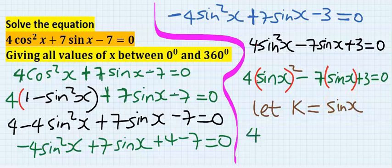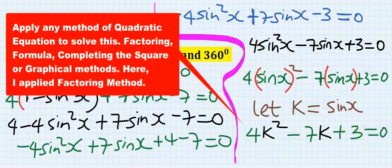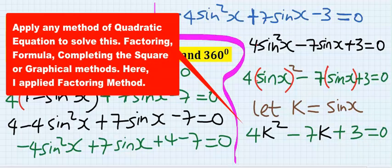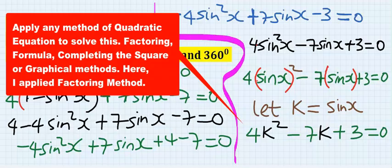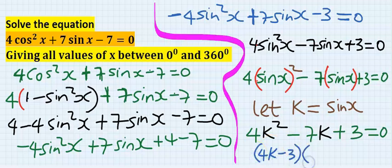I'm now going to have four, and any place I see sine x I will now have k. So it's going to be k squared minus seven k plus three equals zero. I now have a quadratic equation to solve. Solving this using quadratic equation factorization method, we are going to have four k minus three and we are going to have k minus one.